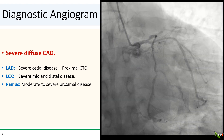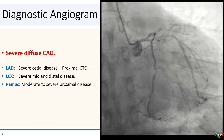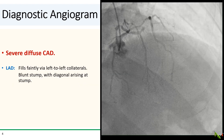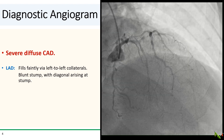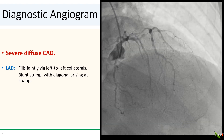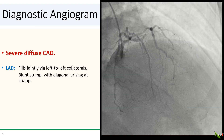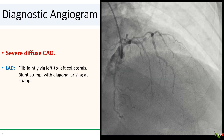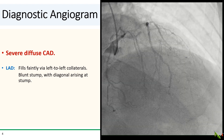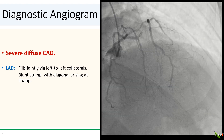The LAD has severe ostial disease and a CTO approximately. The circumflex has severe mid and distal disease, and the ramus is a fairly large vessel with moderate to severe proximal disease. The CTO looks to be over 20 millimeters long, and it has a blunt stump with a diagonal branch arising at the stump. It also looks like there's going to be a 90-degree turn at the occlusion to get to the remainder of the LAD. These factors could all increase the difficulty of successfully crossing the CTO.